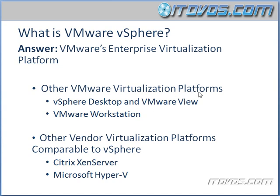VMware does make other virtualization platforms like vSphere Desktop and VMware View. This is what you're going to use if you want to virtualize your desktops, so your virtual machines are going to be running a desktop operating system like Windows 7 or a Linux desktop. vSphere Desktop and VMware View do run on the ESXi platform just like vSphere, but the difference really boils down to licensing and functionality. With vSphere, we can run desktop operating systems on virtual machines, but that's generally cost prohibitive because the licensing is more expensive — vSphere is really designed to run server operating systems. With vSphere Desktop and VMware View, we have a licensing restriction so we can only run desktop operating systems, but the licensing is much cheaper.